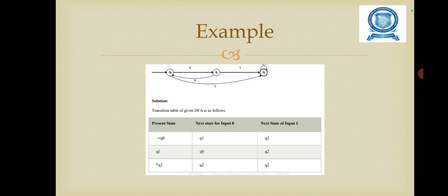In the second row, when the current state is Q1 on input 0, the next state will be Q0, and on input 1, the next state will be Q2. Likewise for the third row, when the current state is Q2 on input 0, the next state will be Q2, and on input 1, the next state will be Q2. Likewise for each and every state, whatever inputs are given, you have to mark in the table column. Thank you.